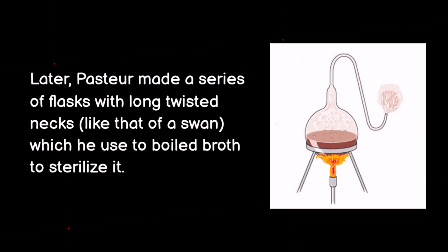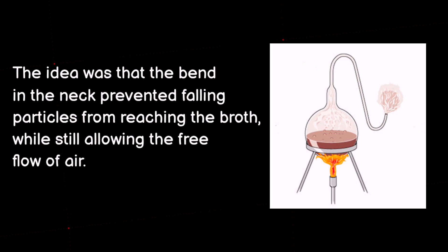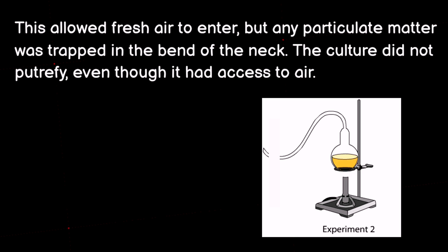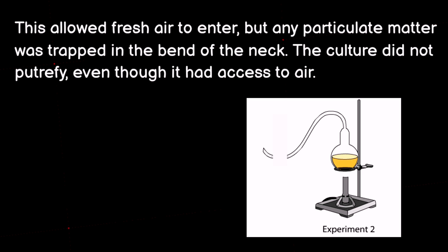Later, Pasteur made a series of flasks with long twisted necks, like that of a swan, which he used to boil broth to sterilize it. The idea was that the bend in the neck prevented falling particles from reaching the broth, while still allowing the free flow of air. Pasteur heated an infusion sealed in a vessel with an S-shaped, or swan neck, let it cool, and then broke off the tip of the vessel. This allowed fresh air to enter, but any particulate matter was trapped in the bend of the neck. The culture did not putrefy, even though it had access to air.